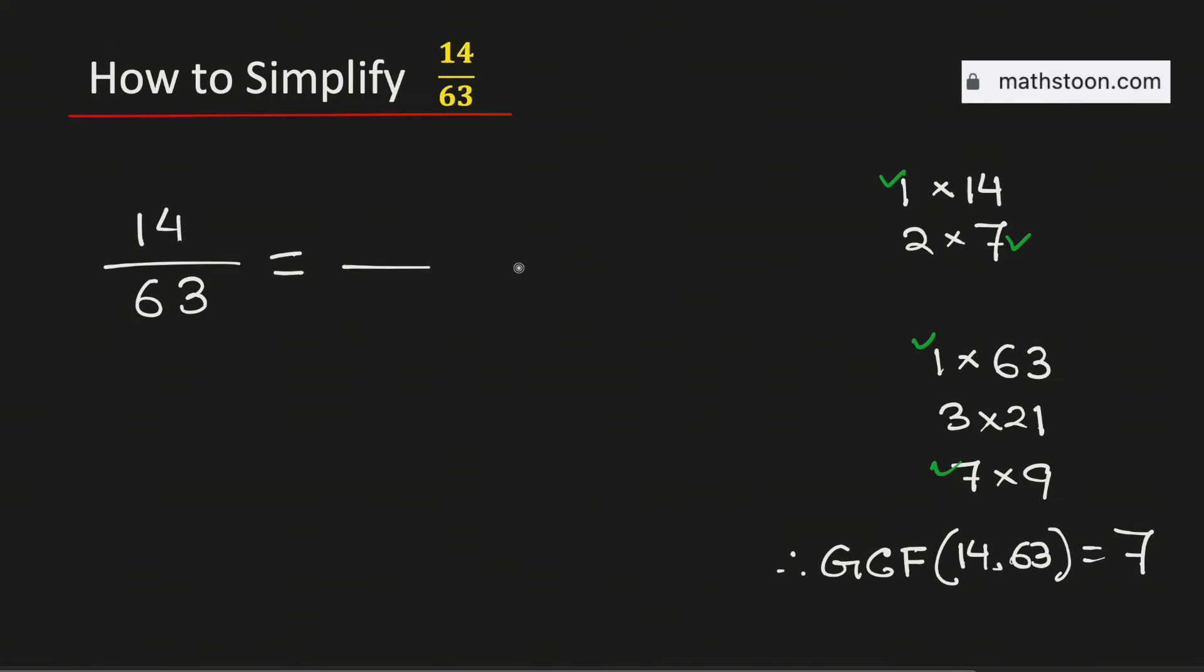So to simplify this fraction, we will divide both 14 and 63 by their greatest common factor, which is 7. And if we divide them by 7, we will get 2 over 9.